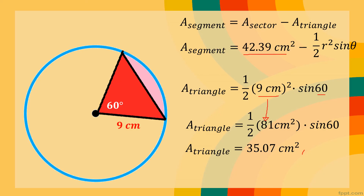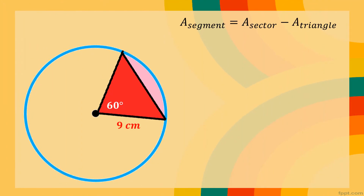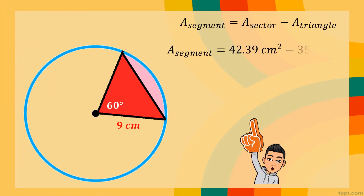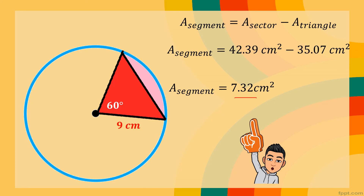After getting the triangle area, we subtract it from the sector area. Area of segment = 42.39 cm² − 35.07 cm² ≈ 7.32 cm². That is how we determine the area of a segment: first find the area of the sector, then subtract the area of the triangle using the formula (1/2) × r² × sin(θ).